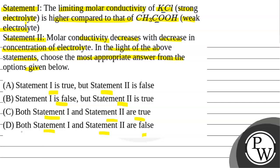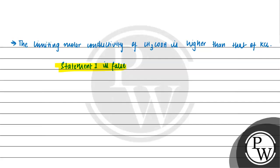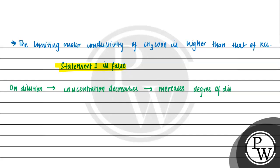Now let us move on to Statement 2, which says molar conductivity decreases with decrease in concentration of electrolyte. We know what molar conductivity is. When we decrease the concentration of electrolyte — that is, on dilution — our concentration of the substance will decrease. But the value of molar conductivity does not decrease. The statement is obviously false. When we increase dilution, concentration decreases.